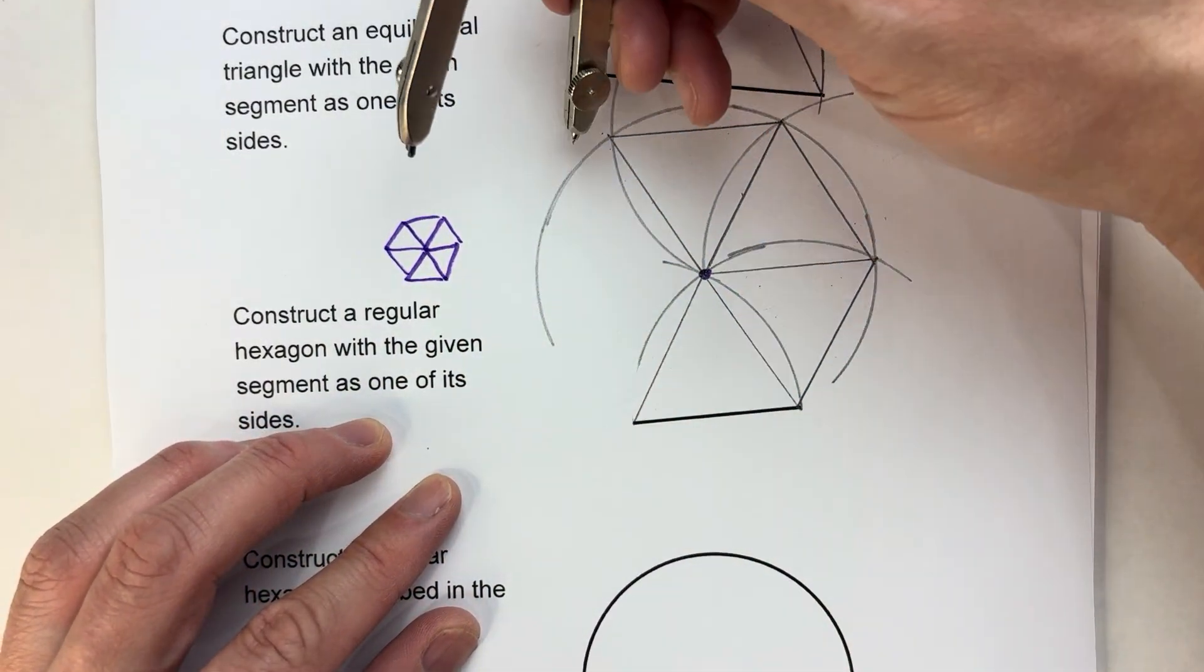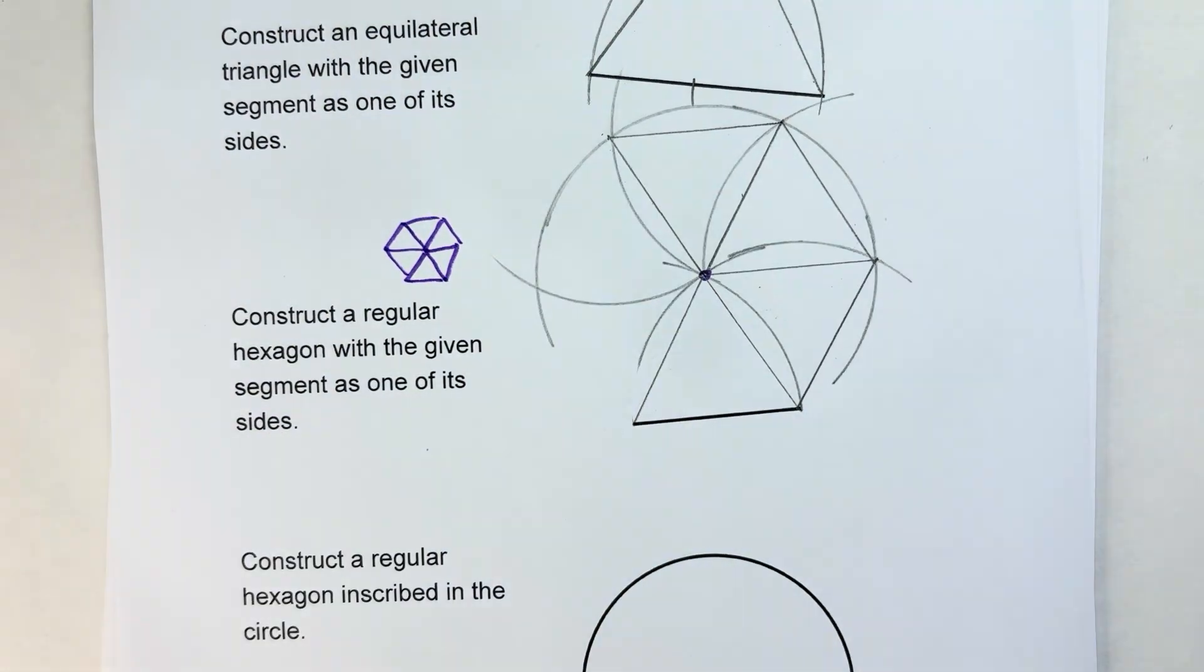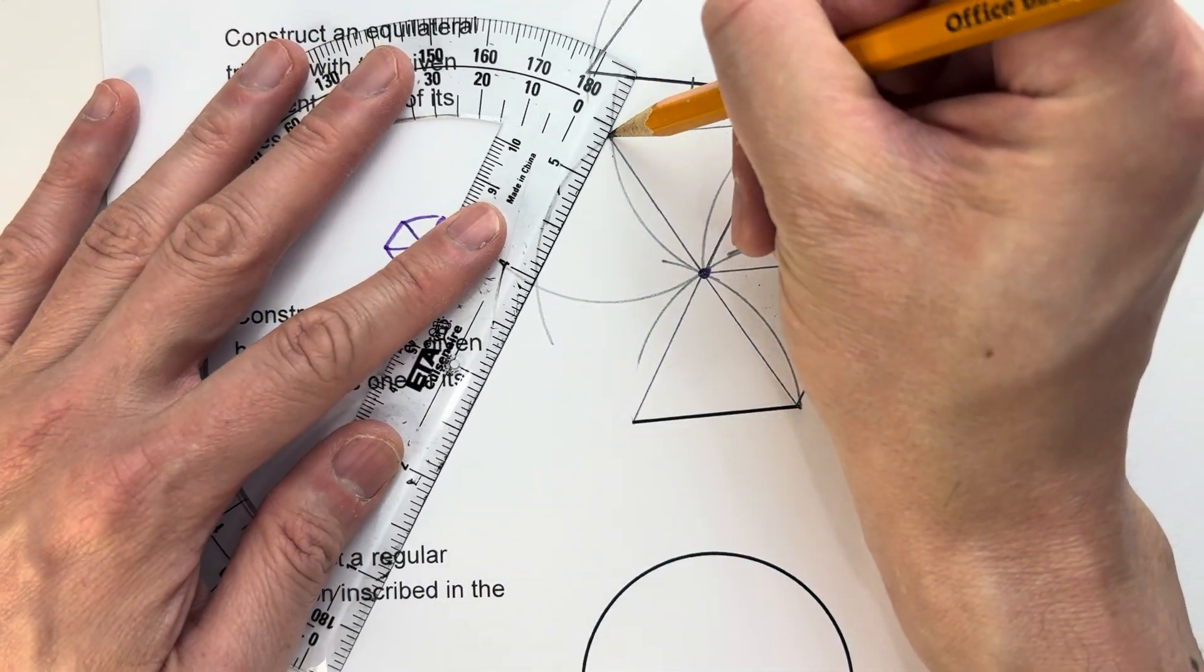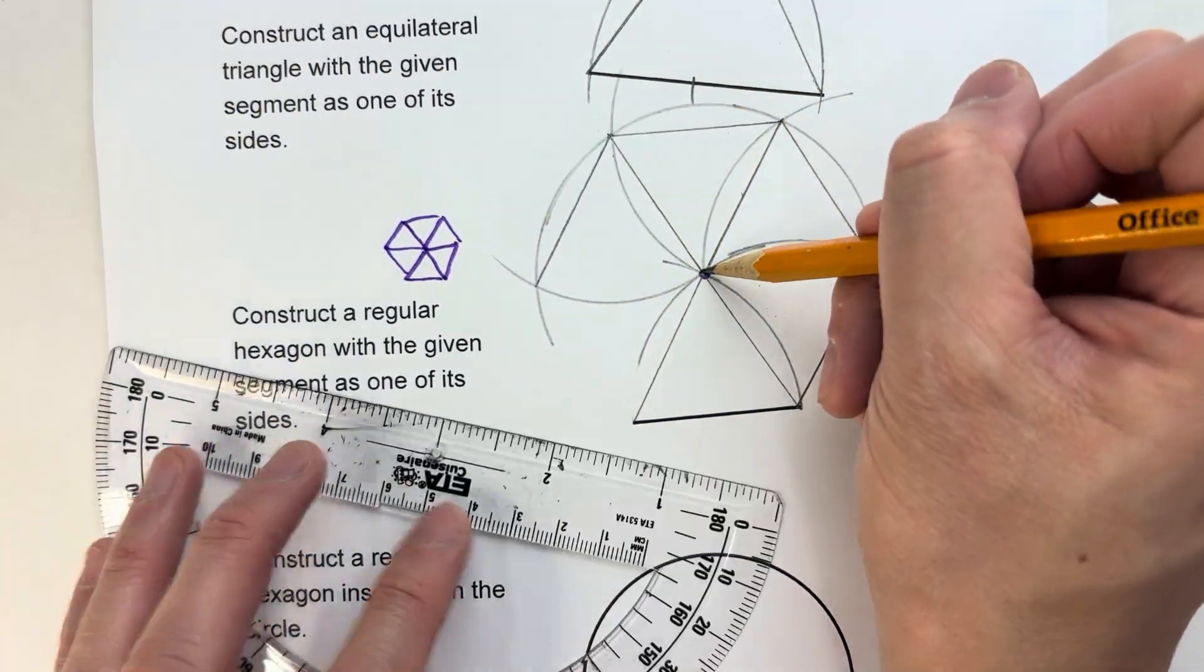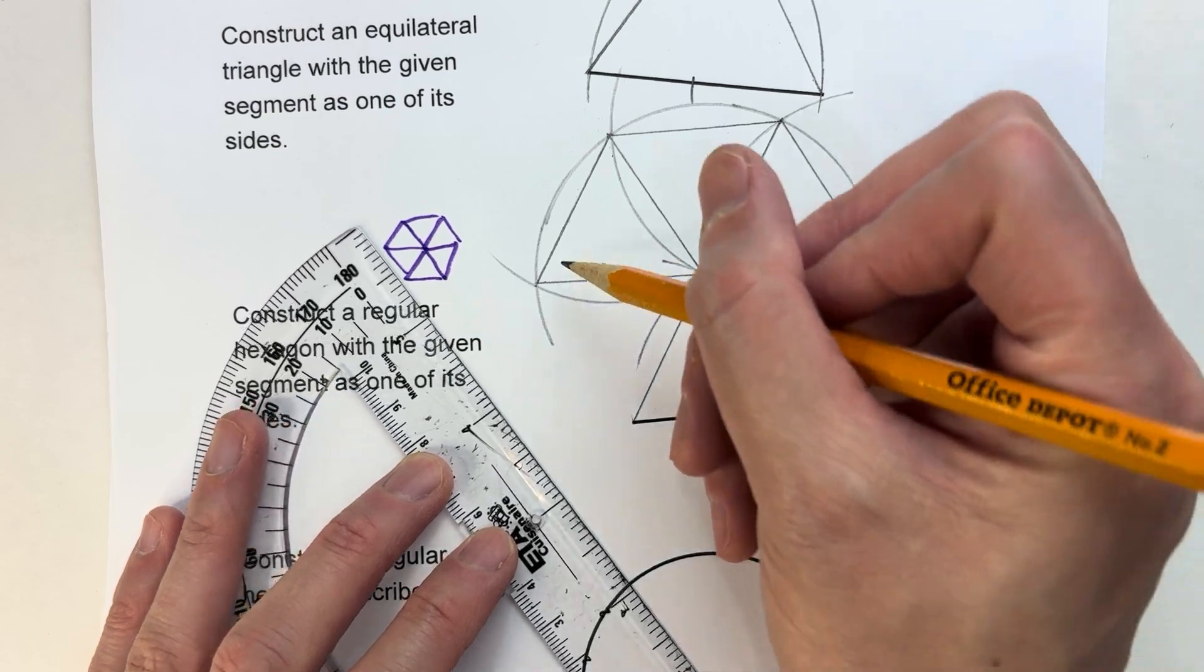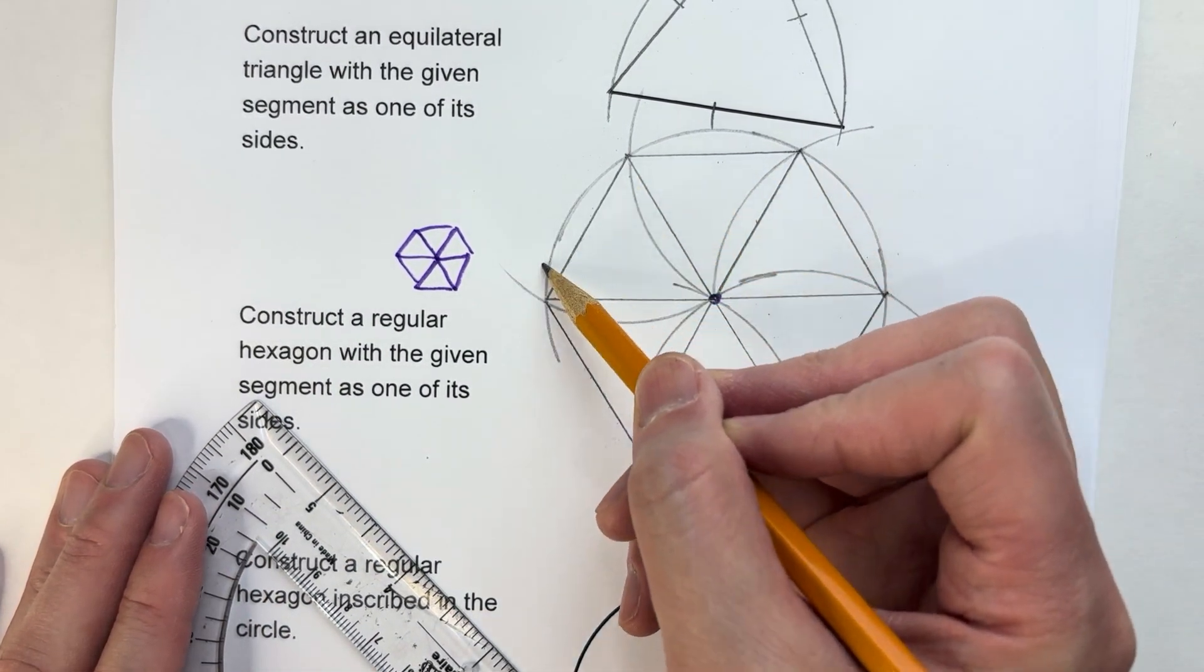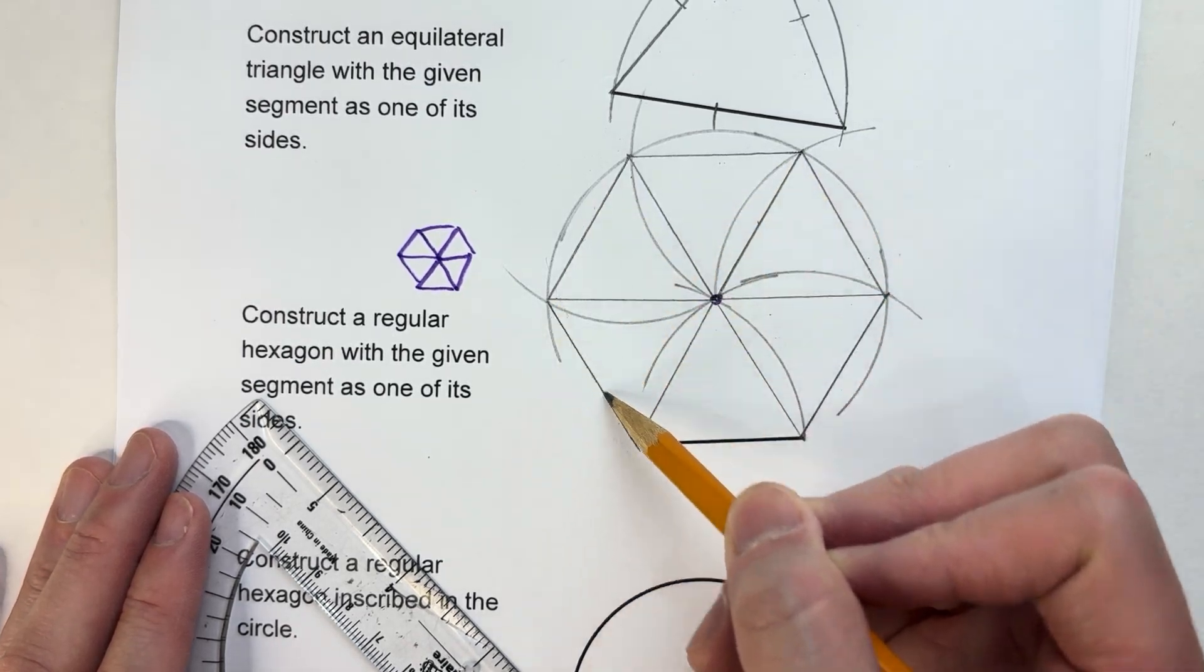But assuming I just keep at my same technique here and keep making equilateral triangles, I'm almost done with the hexagon. I could just connect these last two points here. Do you see the regular hexagon?